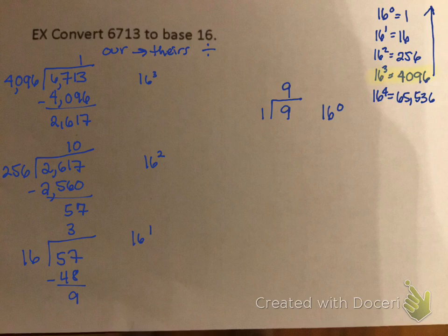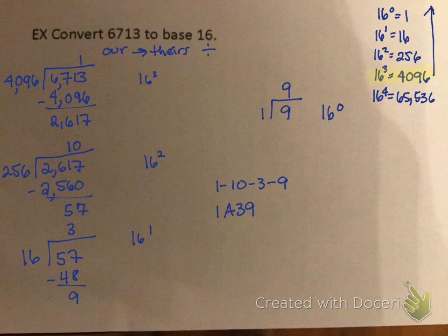Writing out 1, 10, 3, 9 — I can't leave 10 as-is, so in hexadecimal 10 becomes A. The 1, 3, and 9 stay as-is. I add a subscript of 16 to indicate base 16. So the final answer is 1A39 base 16.